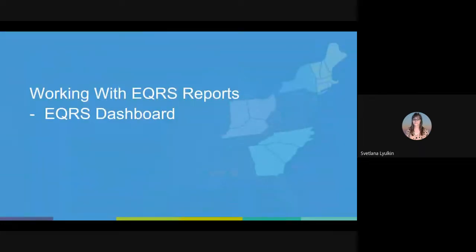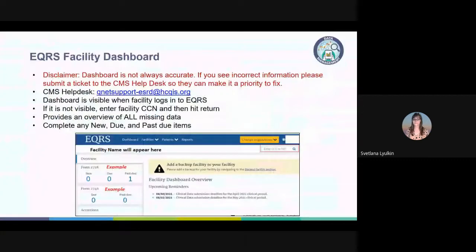Now let's return to EQRS and start with the dashboard. The network and CMS are aware that the dashboard is not always accurate — sometimes it shows things that are due that are not actually due — but most of the time it's the best place to identify discrepancies that need your attention. Please review the dashboard daily and look at every item posted. If you believe something on the dashboard is incorrect, please submit a ticket to the CMS Help Desk. Review and resolve dashboard items regularly and report any errors to the CMS Help Desk.